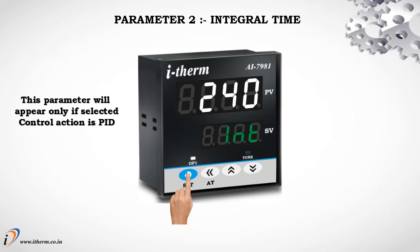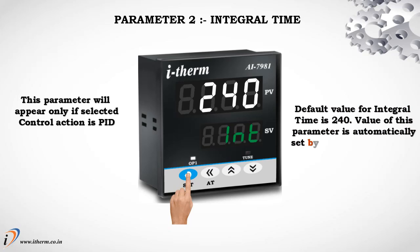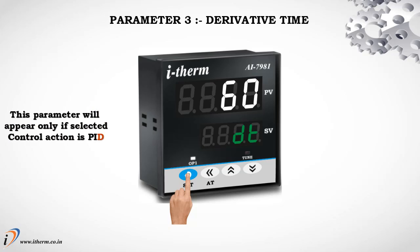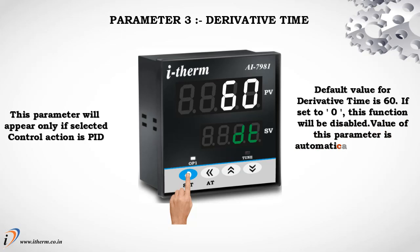This parameter is automatically set by auto tune function. Parameter 3: Derivative Time. This parameter will appear only if selected control action is PID. Default value for derivative time is 60. If set to 0, this function will be disabled. Value of this parameter is automatically set by auto tune function.